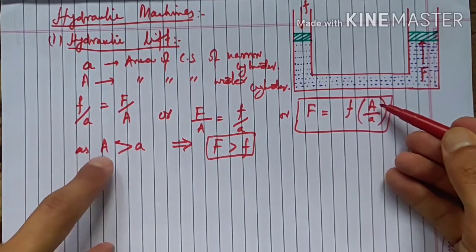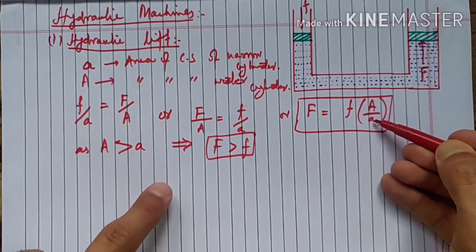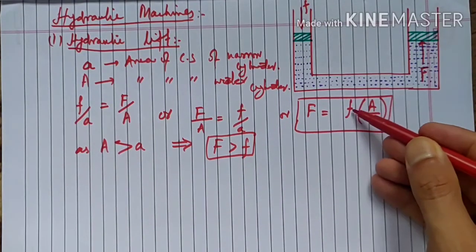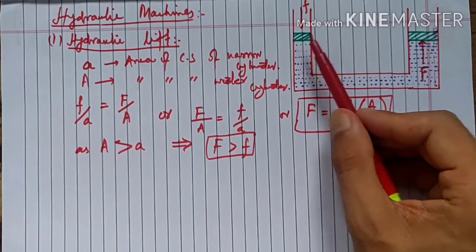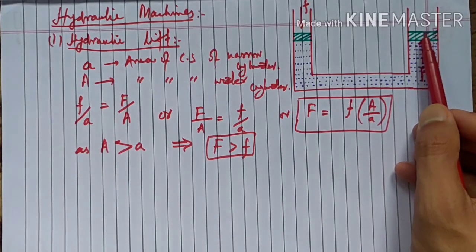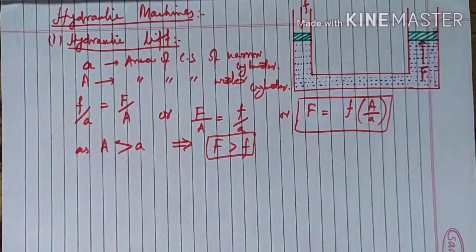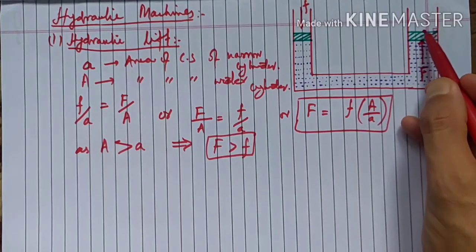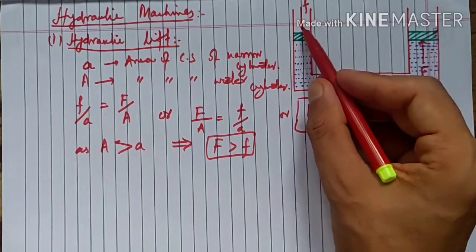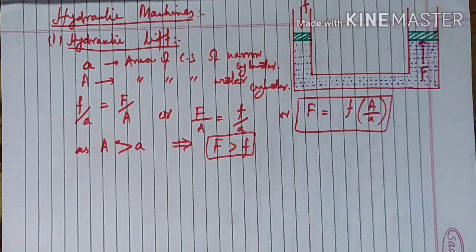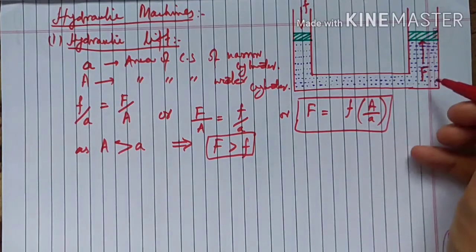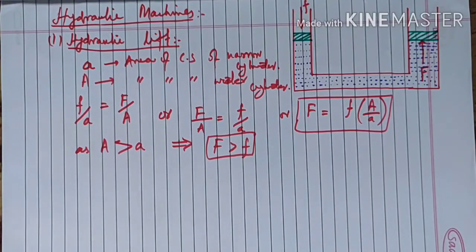Since A is the larger denominator, multiplying it gives a bigger F. So if you apply a small force to the narrow piston, a much greater force is produced on the wider piston. This means if you place a heavy load — a vehicle or heavy object — on the large piston, it can be lifted up. This is how we use the hydraulic lift to raise heavy objects from a lower level to a higher level, based on Pascal's law.